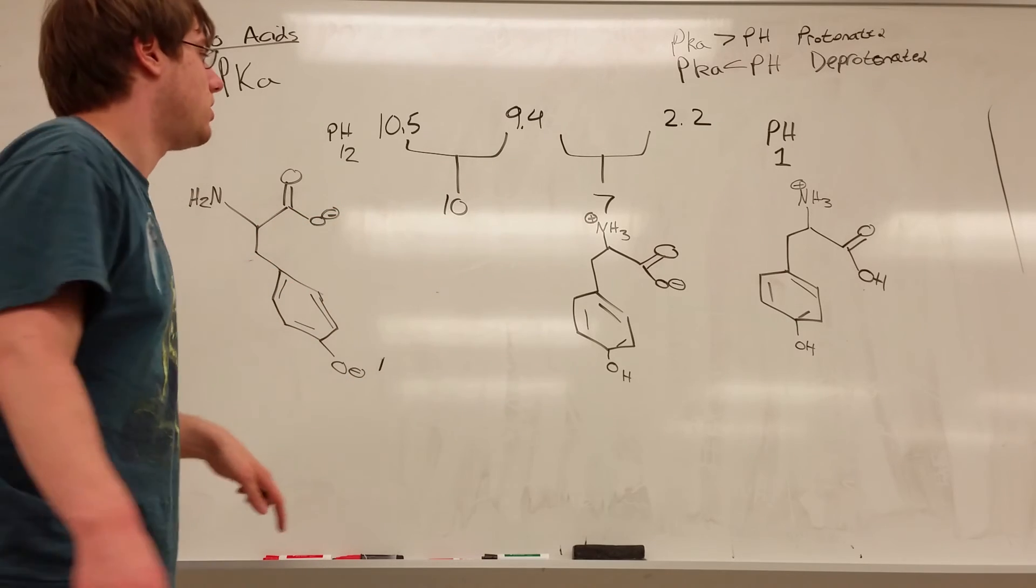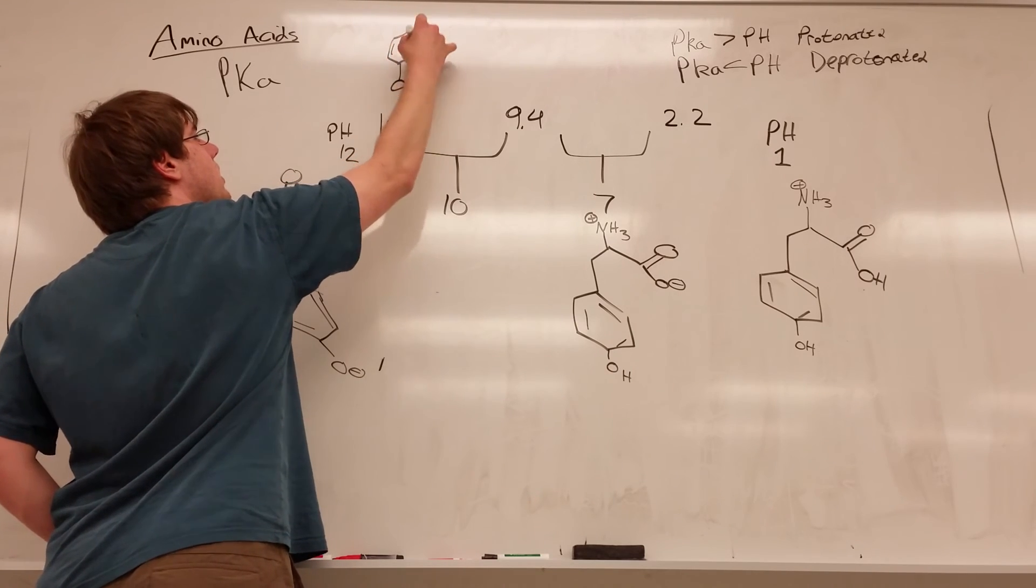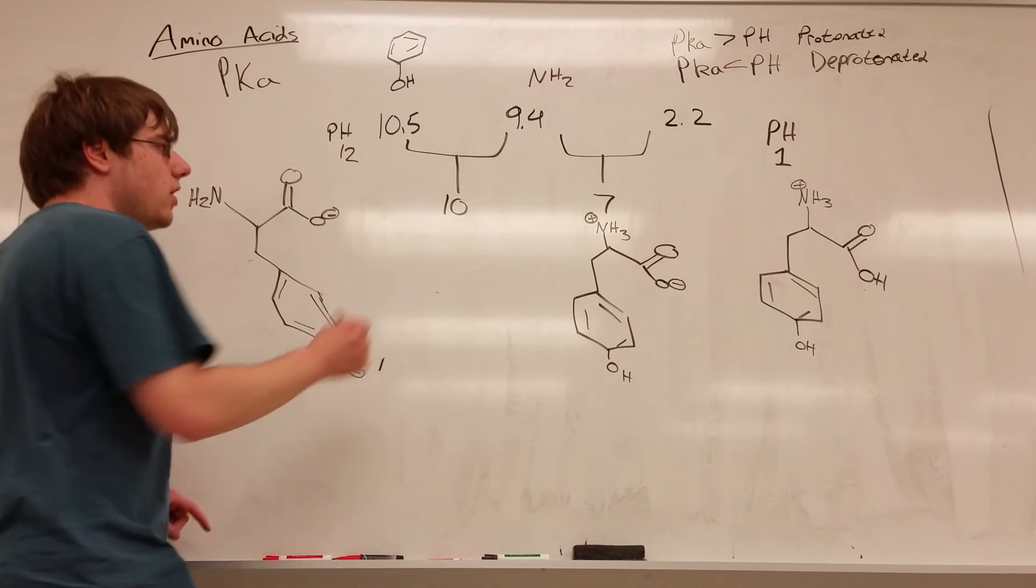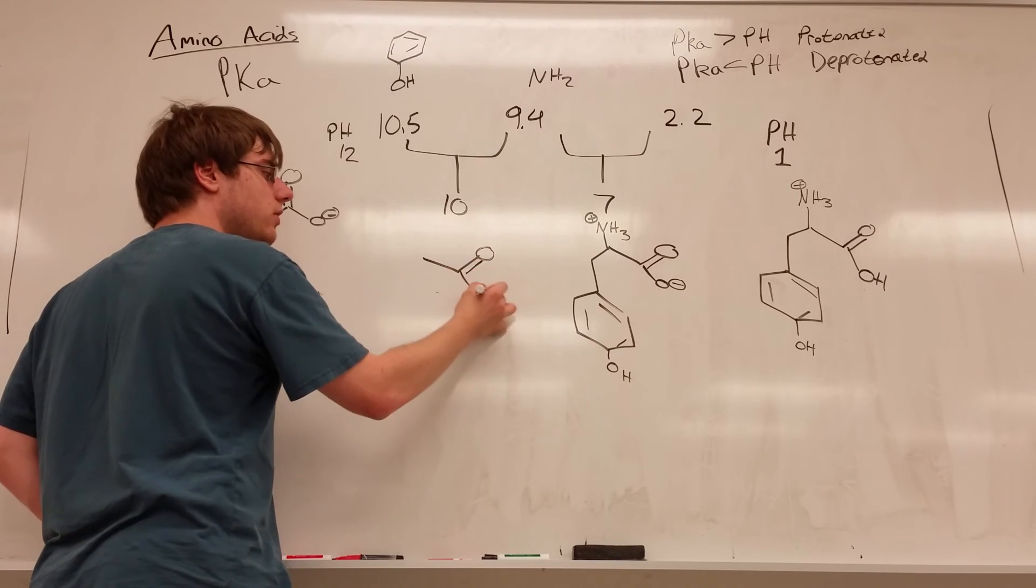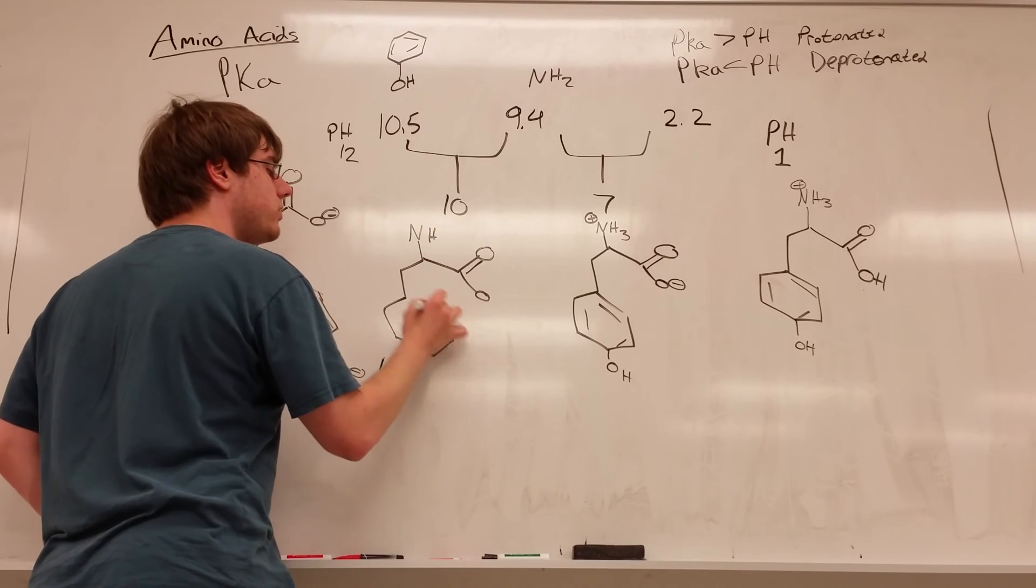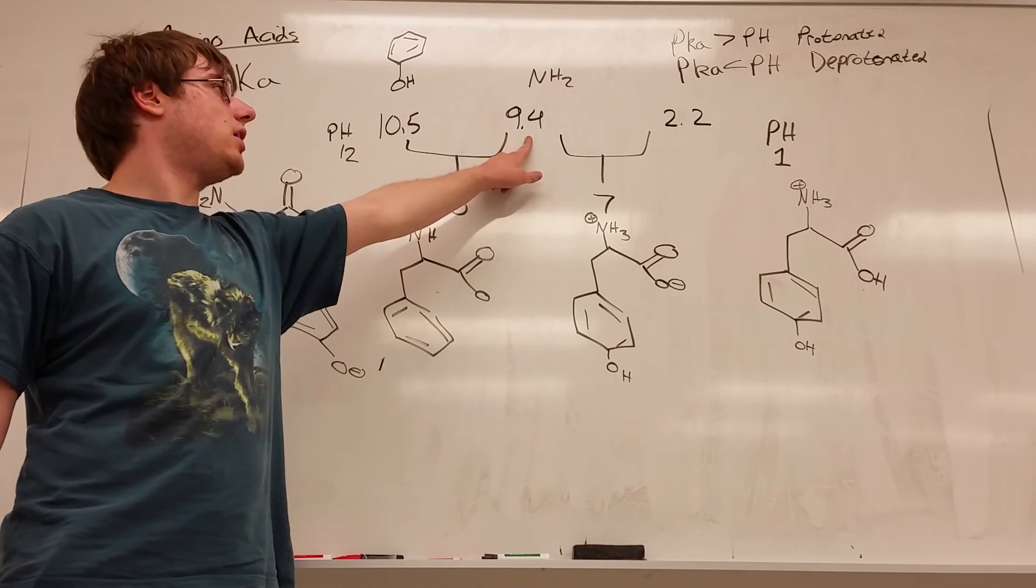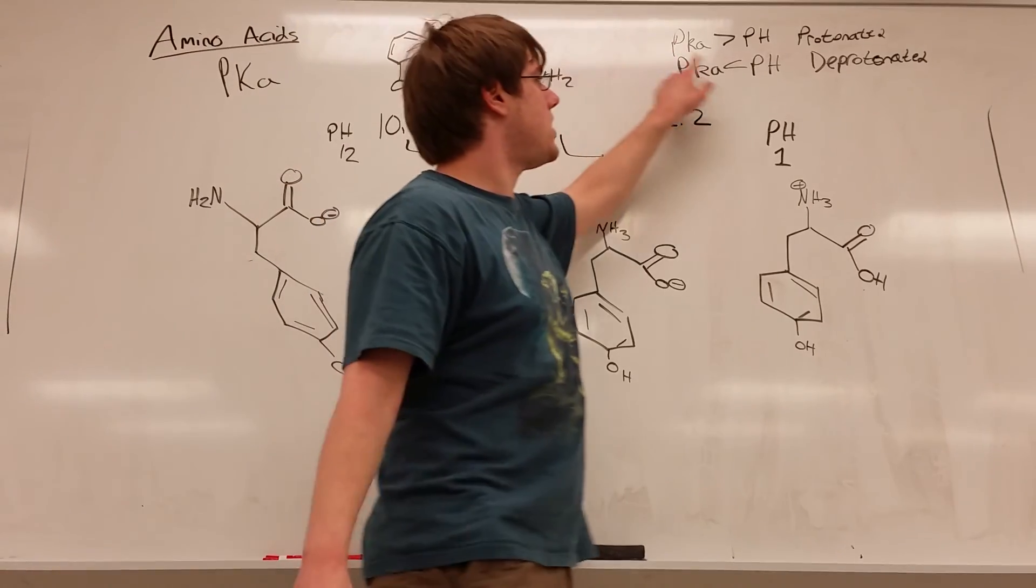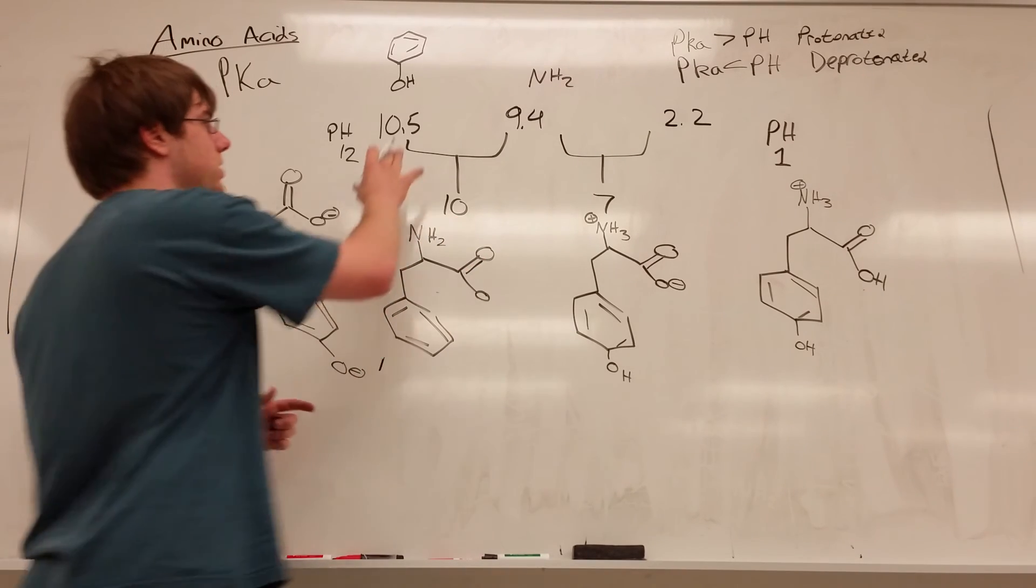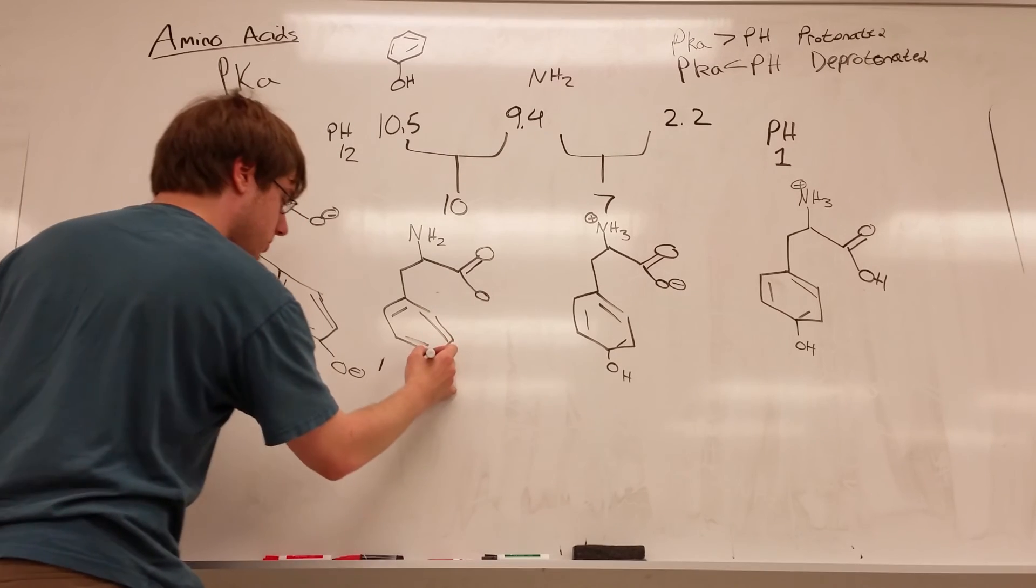Now we just have to consider the pH of 10. So we said that the OH group of the benzene ring had the pKa of 10.5, and we said the amino group had the pKa of 9.4. So now we're kind of in between. We have, let's start by just drawing the base structure of tyrosine, and let's see. So the amino group has a 9.4 pKa, but we're in a pH of 10. So pKa is less than pH, the NH2 group would be deprotonated, so NH2. But 10.5 is greater than pH, the group pH of 10, so it will be protonated. So this would still be an OH.